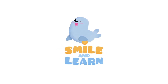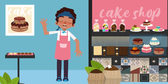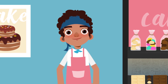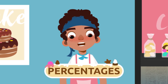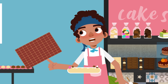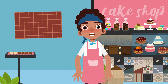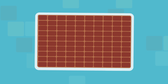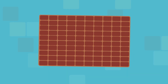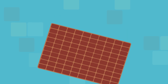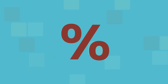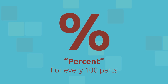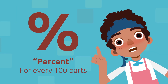Smile and Learn! Hello friends, welcome to my pastry shop. Today we're going to learn how to calculate percentages. A percentage is an amount expressed as a number of parts of something divided into 100 parts. The symbol we use to indicate percentage is this sign, and we read it as 'percent,' which means 'for every 100 parts.'